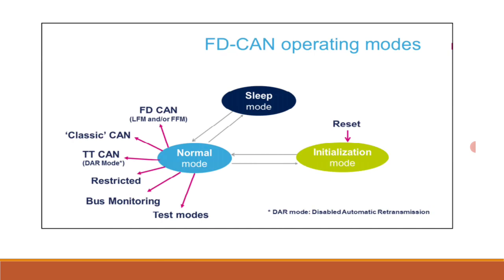Here are the FD CAN operating modes: sleep mode, normal mode, and initialization mode. Normal mode is associated with various features like FD CAN LFM and/or FFM and classic CAN. Also available are TTCAN with DAR mode, restricted mode, and bus monitoring. Test modes are available in normal mode. The device can transition to and from initialization mode and sleep mode from reset.